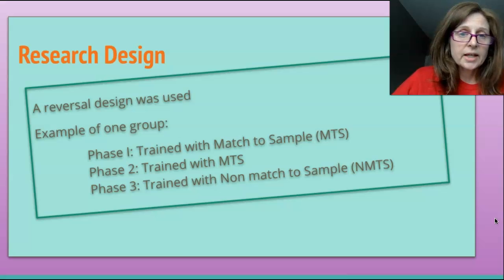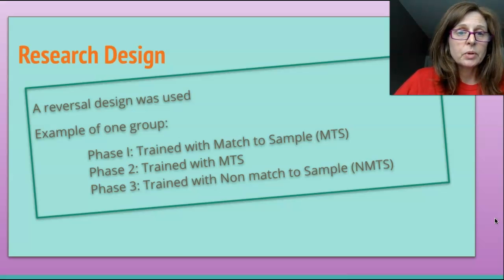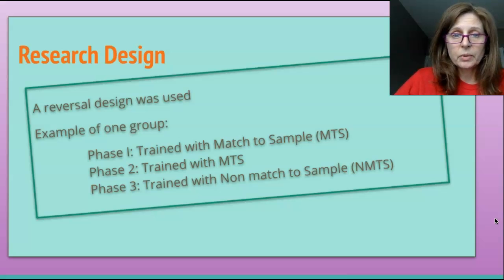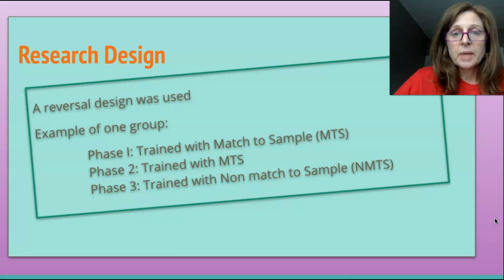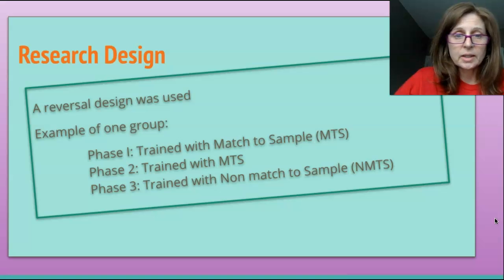The design that was used was a reversal design. For example, in phase one the rats were trained with match to sample; phase two, match to sample again; and then phase three, they were trained with non-match to sample.